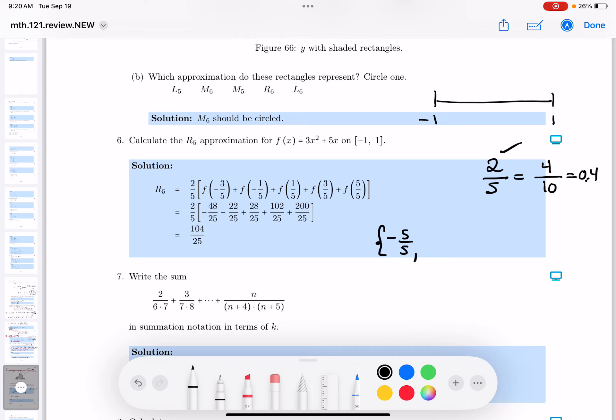Then I move up 2 fifths. What would that be? Minus 3 fifths. Then I'm going to move up again 2 fifths. Minus 1 fifth. Then I'm going to move up 2 fifths again. 1 fifth. Then I'm going to move up again. That's going to be 3 fifths. Then I'm going to move up again. Then it's going to be 5 fifths. And that's where I'm stopping.